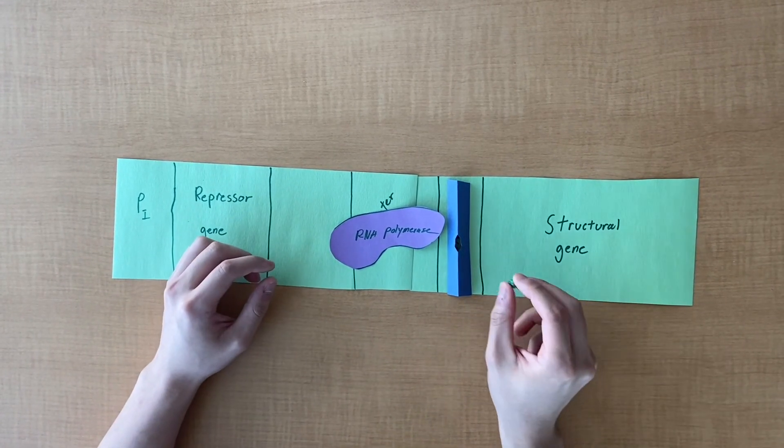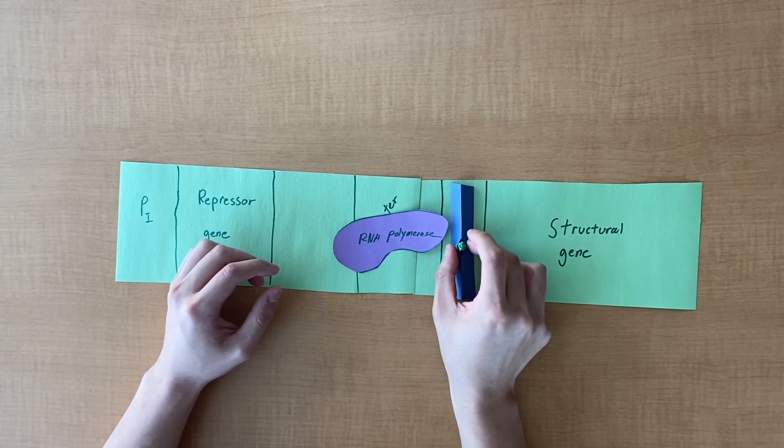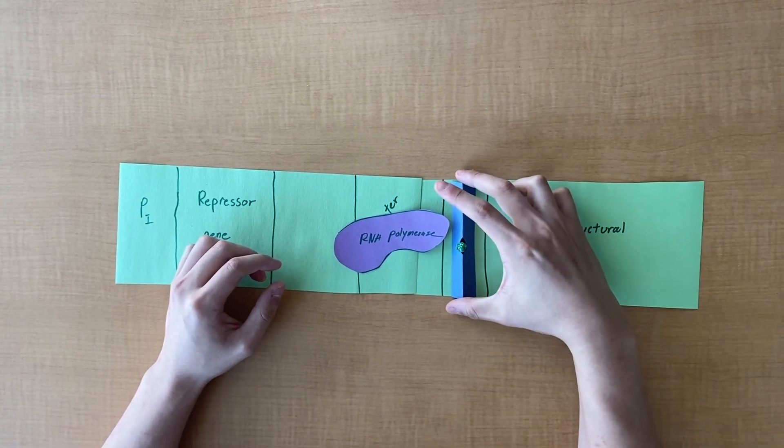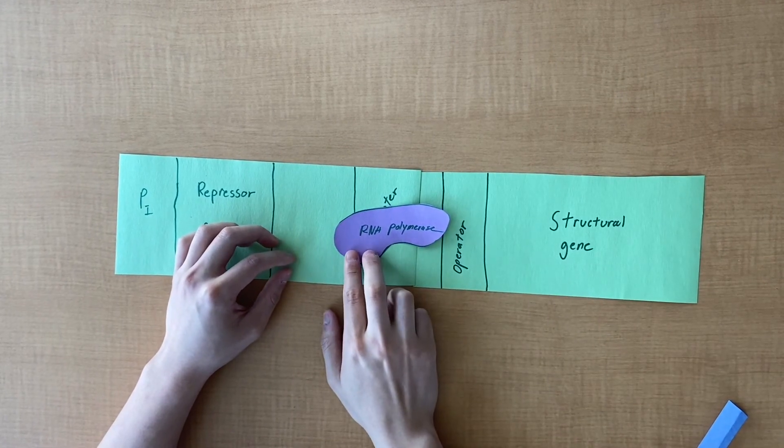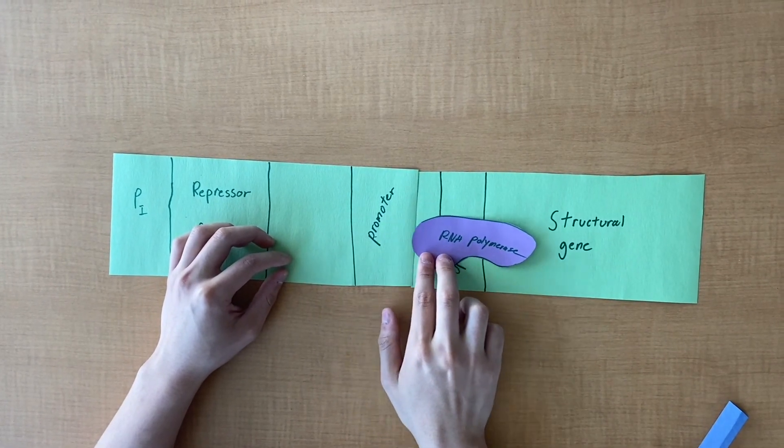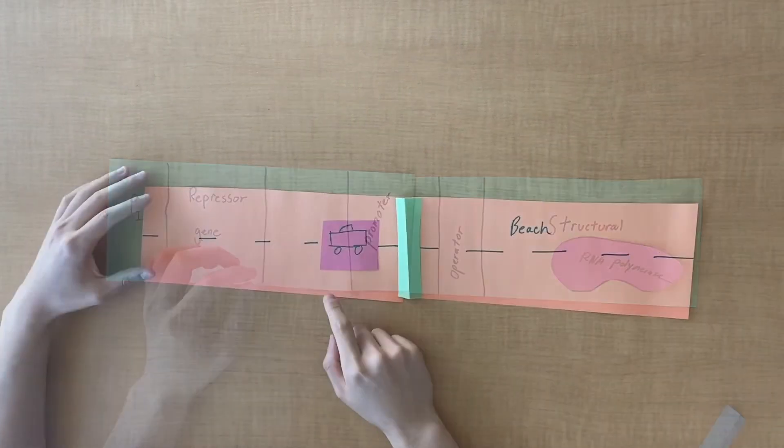In presence of the effector molecule, the effector molecule will bind to the allosteric site of the repressor protein, making it inactive, detaching it from the operator site, thus allowing RNA polymerase to continue and transcribe the structural gene.